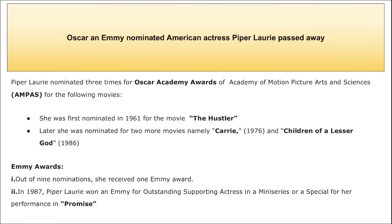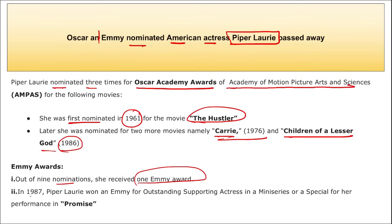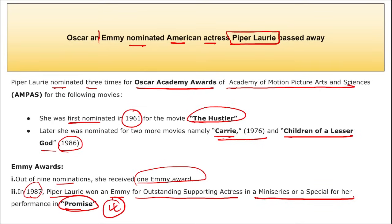Oscar and Emmy nominated American actress Piper Laurie has recently passed away. She was nominated three times for Oscar Academy Awards — first in 1961 for The Hustler, then for Carrie (1976) and Children of a Lesser God (1986). Out of nine Emmy nominations, she received one Emmy Award in 1987 for Outstanding Supporting Actress in a Miniseries or Special for the film Promise.